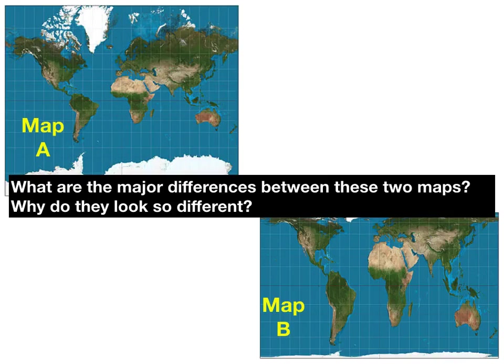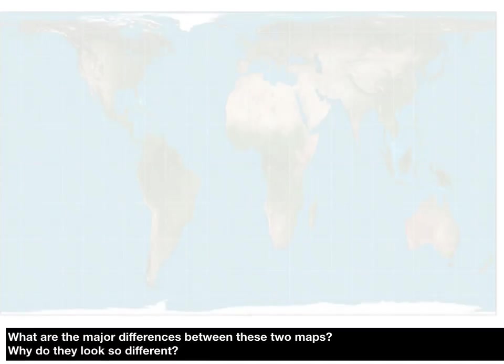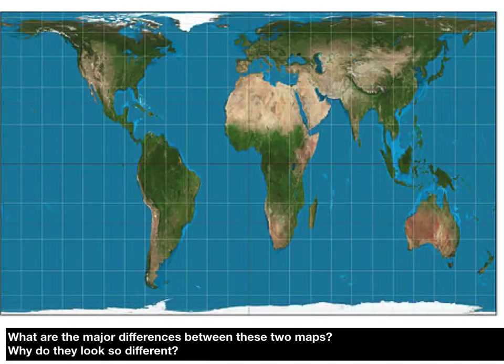We're going to start with projections. So when we look at these two maps, what are the major differences that we can observe? Why do they look so different? We have map A on the top left and map B on the bottom right. These are both very common projections. When we look closely at map A, we're seeing that the continents look elongated and maybe this isn't the natural size and shape that we're used to.